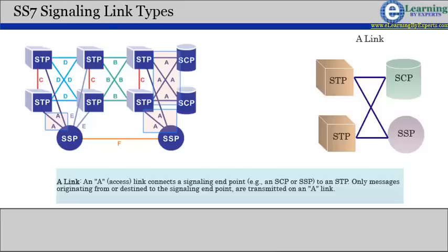Only messages originating from or destined to the signaling endpoint are transmitted on an A link.